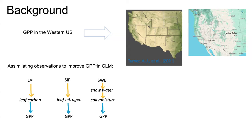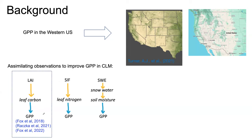I want to know what GPP looks like in the Community Land Model and whether we can use data assimilation to improve GPP in the western United States. We know there are various satellite observations such as MODIS LAI, solar-induced fluorescence (SIF) satellite products, and snow water equivalent (SWE) data. In the model, GPP is influenced by LAI, leaf nitrogen, and soil moisture.